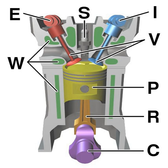Once ignited and burnt, the combustion products—hot gases—have more available thermal energy than the original compressed fuel-air mixture which had higher chemical energy. The available energy is manifested as high temperature and pressure that can be translated into work by the engine.